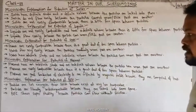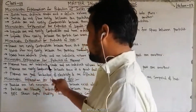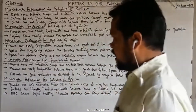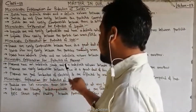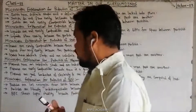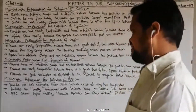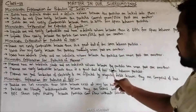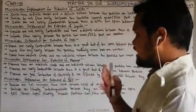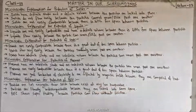Now, microscopic explanation for properties of plasma. Plasma has an indefinite shape and an indefinite volume because the particles can move past one another. It is very compressible because there is a great deal of free space between particles.